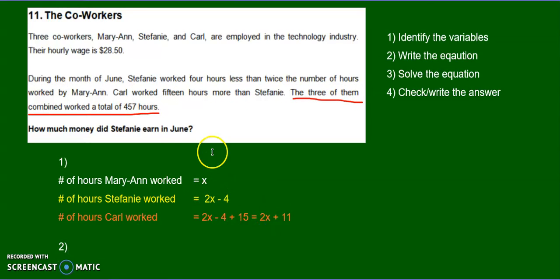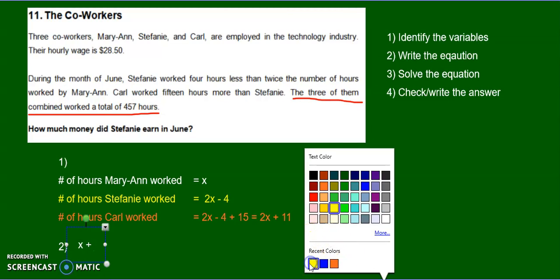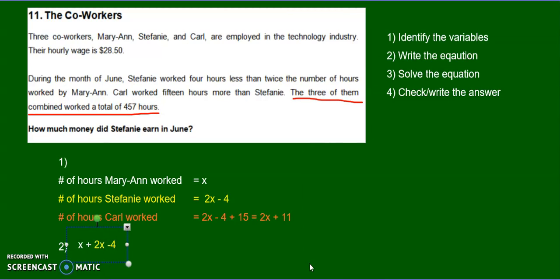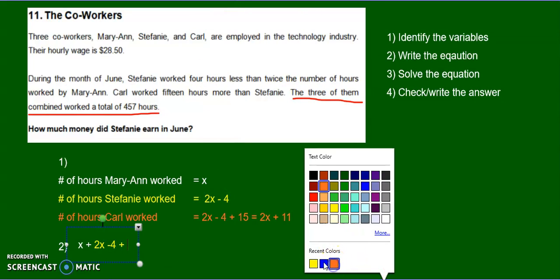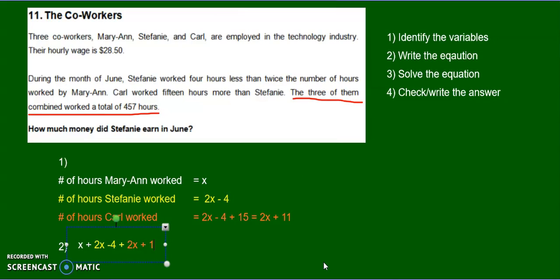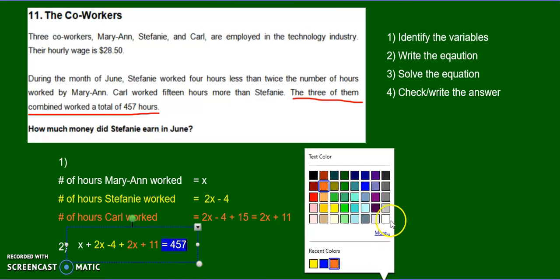You add up all of this stuff. And that equals 457. So x plus 2x minus 4, 2x minus 4, plus 2x plus 11, equals 457. So this is the equation.